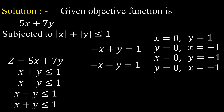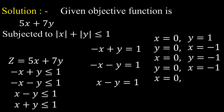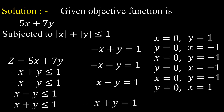The third equation from the third constraint is x − y = 1. Taking x = 0 gives y = −1; taking y = 0 gives x = 1. The fourth equation from the fourth constraint is x + y = 1. Taking x = 0 gives y = 1; taking y = 0 gives x = 1.